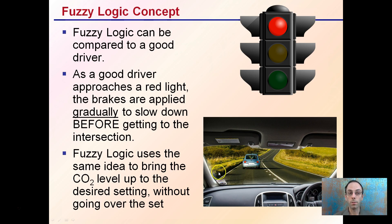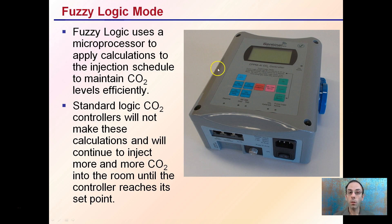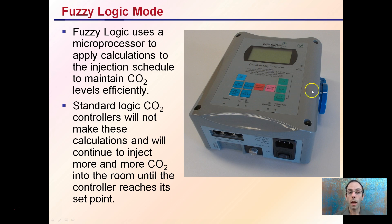This helps make them more efficient. Within the unit is a microprocessor that applies calculations to the injection schedule to maintain CO2 levels efficiently. Standard logic controllers will not make these calculations and will continue to inject more and more CO2 until the room reaches the set point, then turn off. If the air wasn't mixed properly, that can cause an overshoot, then a drop, then continued injecting — which can cause issues. Having this microprocessor applying calculations ensures that the CO2 added to the grow room is added efficiently based on calculations of conditions over time.